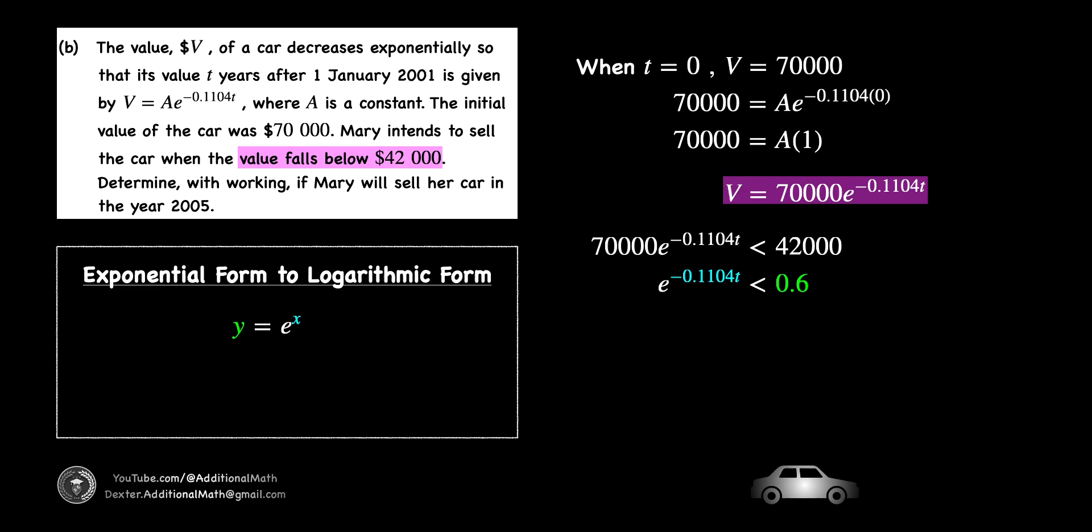Given the exponential form of y equal to e to the power of x, the logarithmic form will be x equals log y to the base of e, where the exponent x is now the subject of the equation. Log y to the base of e can also be written as ln y as this is also known as a natural logarithm. Thus, our exponent negative 0.1104t will be less than ln 0.6.